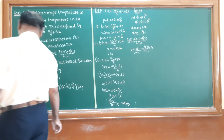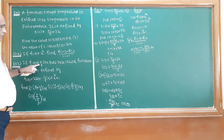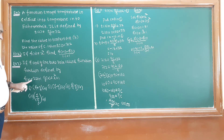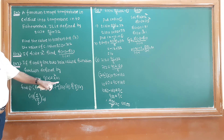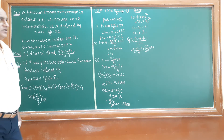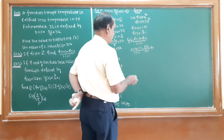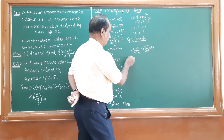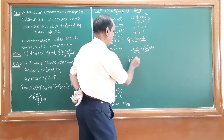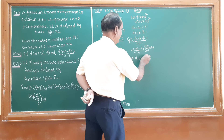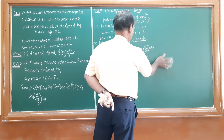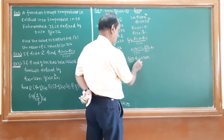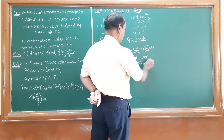Now the third example: given two real-valued functions f(x) = 2x + 1 and g(x) = x² + 1, find: (a) f + g of x, (b) f - g of x, (c) f times g of x, and (d) f divided by g of x. The solution begins with f(x) = 2x + 1 and g(x) = x² + 1.